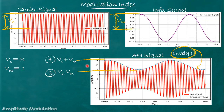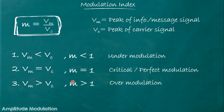If we connect these peaks by an imaginary dashed line, that line is called the envelope. vc + vm is also called the peak of the envelope — the maximum value of the envelope — and vc − vm is called the minimum value of the envelope. The modulation index is the ratio of vm and vc, where vm and vc are the peaks of the information and carrier signal respectively.